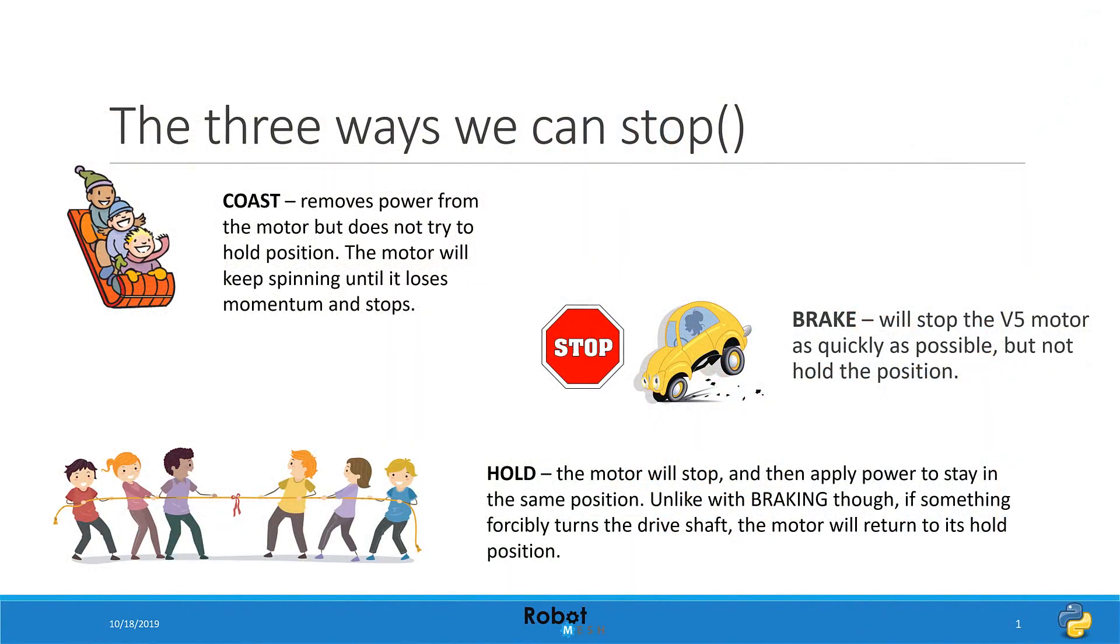There are three ways we can stop a motor. In the previous example when we ran our program we saw that the right motor spun for 10 seconds and then lost power. This is what we call coasting where the motor loses power and then gradually loses momentum until it comes to a standstill. Now if we do not specify how we want our motor to stop it is the default action.